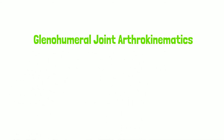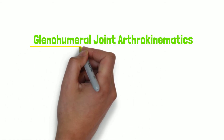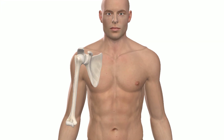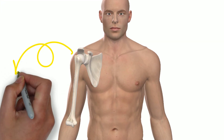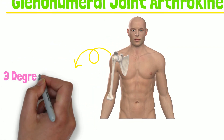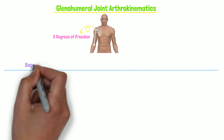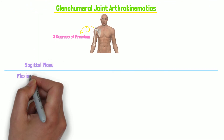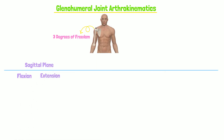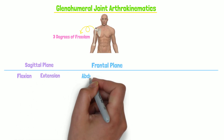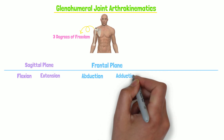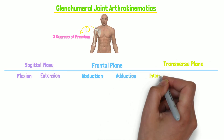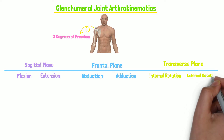Hello! In this video we will examine glenohumeral joint arthrokinematics. The glenohumeral joint possesses three degrees of freedom, meaning it moves in all three cardinal planes. It moves in the sagittal plane for flexion and extension, the frontal plane for abduction and adduction, and the transverse plane for internal and external rotation.